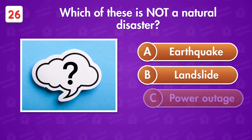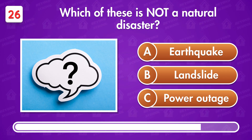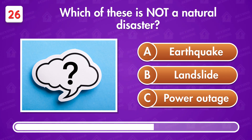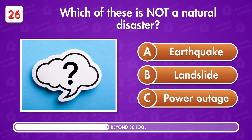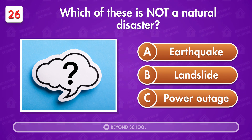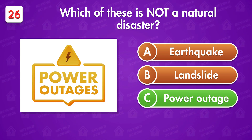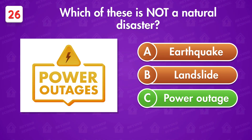Which of these is not a natural disaster? Option C — Power Outage.